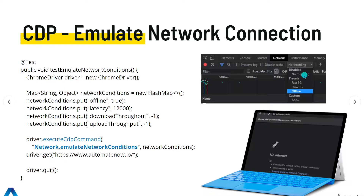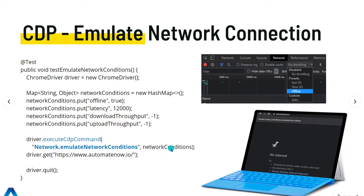Let's see how we could emulate network conditions - for example, no internet connection. Manually in Chrome DevTools you would click the Network tab and select Offline. In our test, we have an instance of ChromeDriver and a HashMap specifying network conditions: offline set to true, meaning no internet connection, along with other optional parameters like latency and download/upload restrictions. We call driver.executeCdpCommand, which requires two parameters: the command to execute - in this case Network.emulateNetworkConditions - and the map containing the conditions. When we navigate to automatenow.io, all we get is a page stating there is no internet connection.